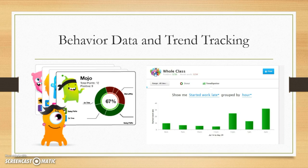Additionally, ClassDojo tracks all student data automatically and can show overall averages and trend reports both for whole groups and for individual students. This is a great tool for behavior tracking and pinpointing trouble times or activities for specific groups or students.